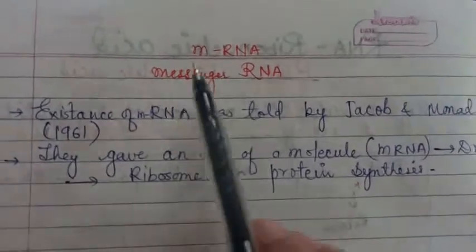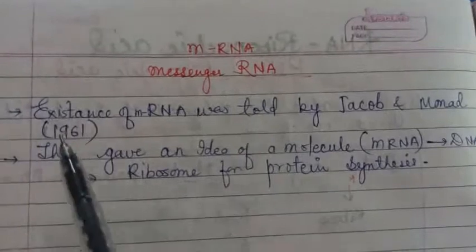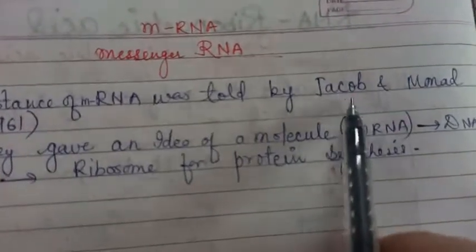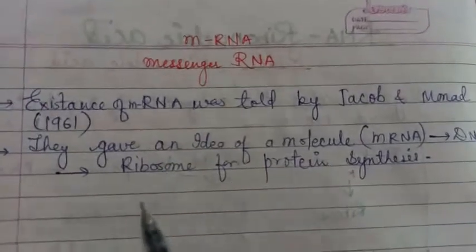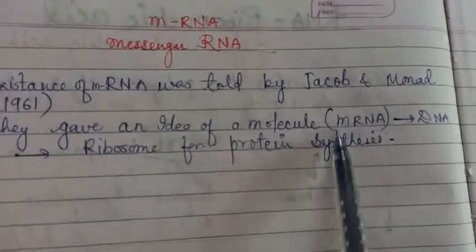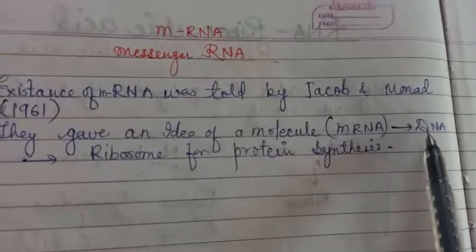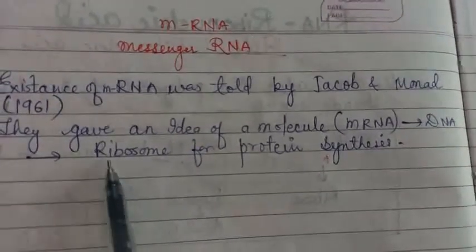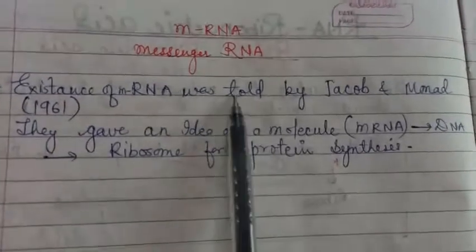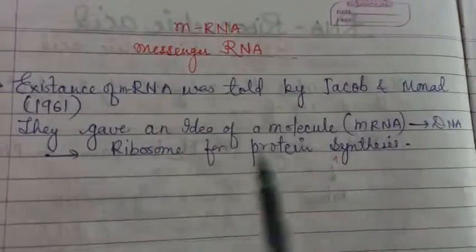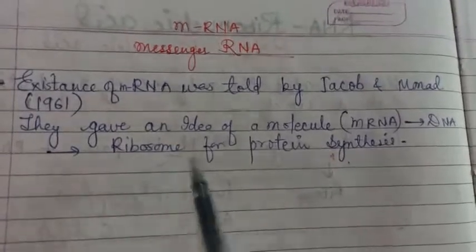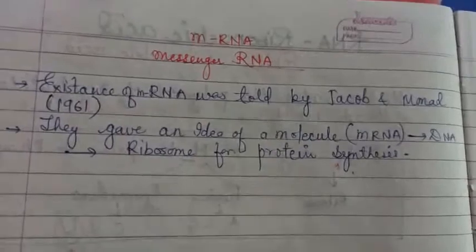Now we will discuss these three types of RNA in detail. First one was mRNA or messenger RNA. Existence of mRNA was told by Jacob and Monad in 1961. Jacob and Monad first time told the existence of messenger RNA. They gave an idea of a molecule, that is messenger RNA, which takes the message of DNA to the ribosome where the protein synthesis is taking place. Messenger RNA carries DNA's message to the ribosome for protein synthesis.